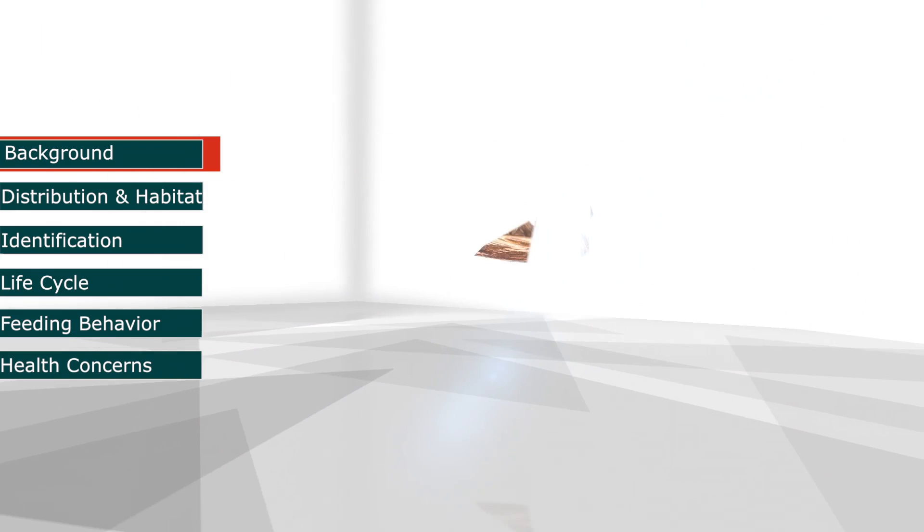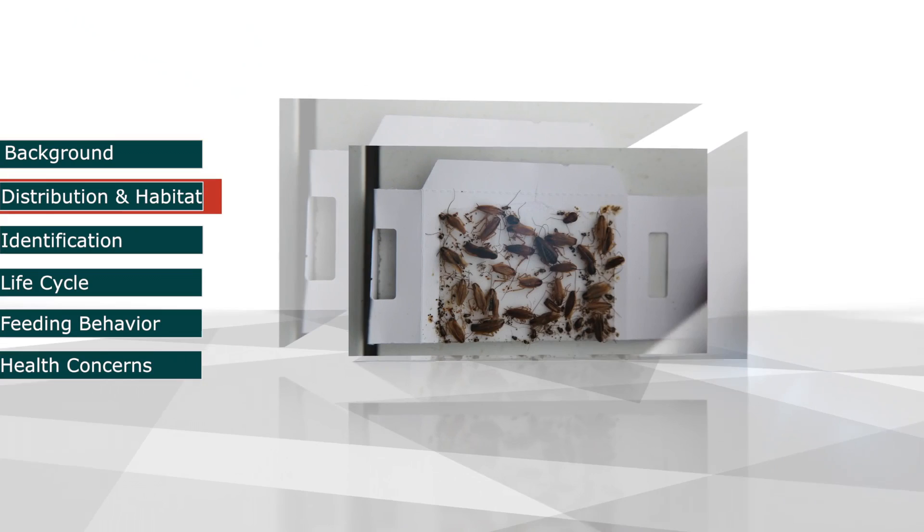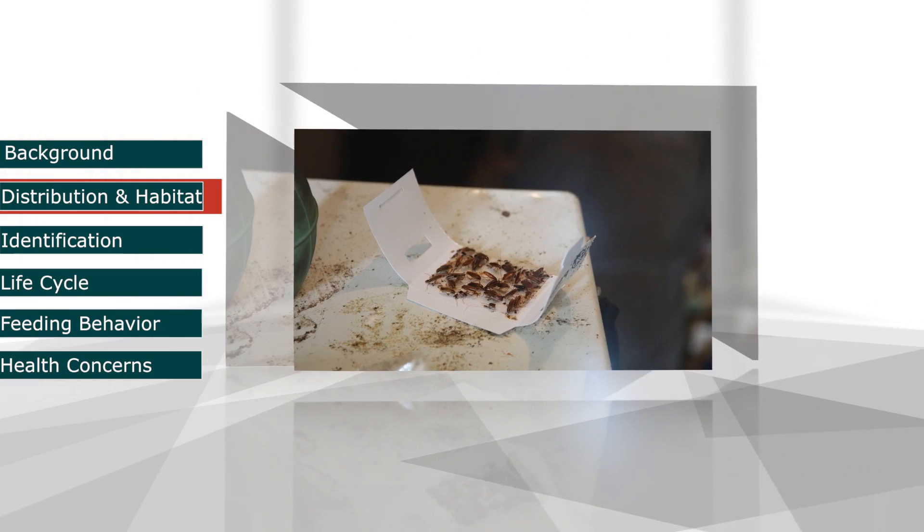They have adapted to only be able to survive around humans or human activity. Although the German cockroach can be found worldwide, they have become a domesticated species, adapted to live primarily in structures and controlled temperatures.